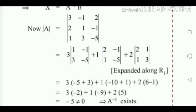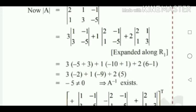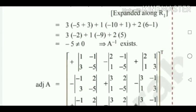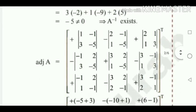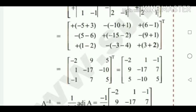Now find the determinant of A by expanding the first row. Expanding the first row gives the answer minus 5, which is not equal to 0. Therefore A inverse exists. Then find the adjoint of A. For a 3 by 3 matrix, find the minor as well as the cofactor. If you assign signs to the minor, you get the cofactor. Write all cofactors for each element in the first, second, and third rows. After finding the cofactor, transpose the matrix — rows are changed into columns — to get the adjoint of A: minus 2, 9, 5 as the first column; 1, minus 17, 10, minus 10 as the second column; minus 1, 7, 5 as the third column.